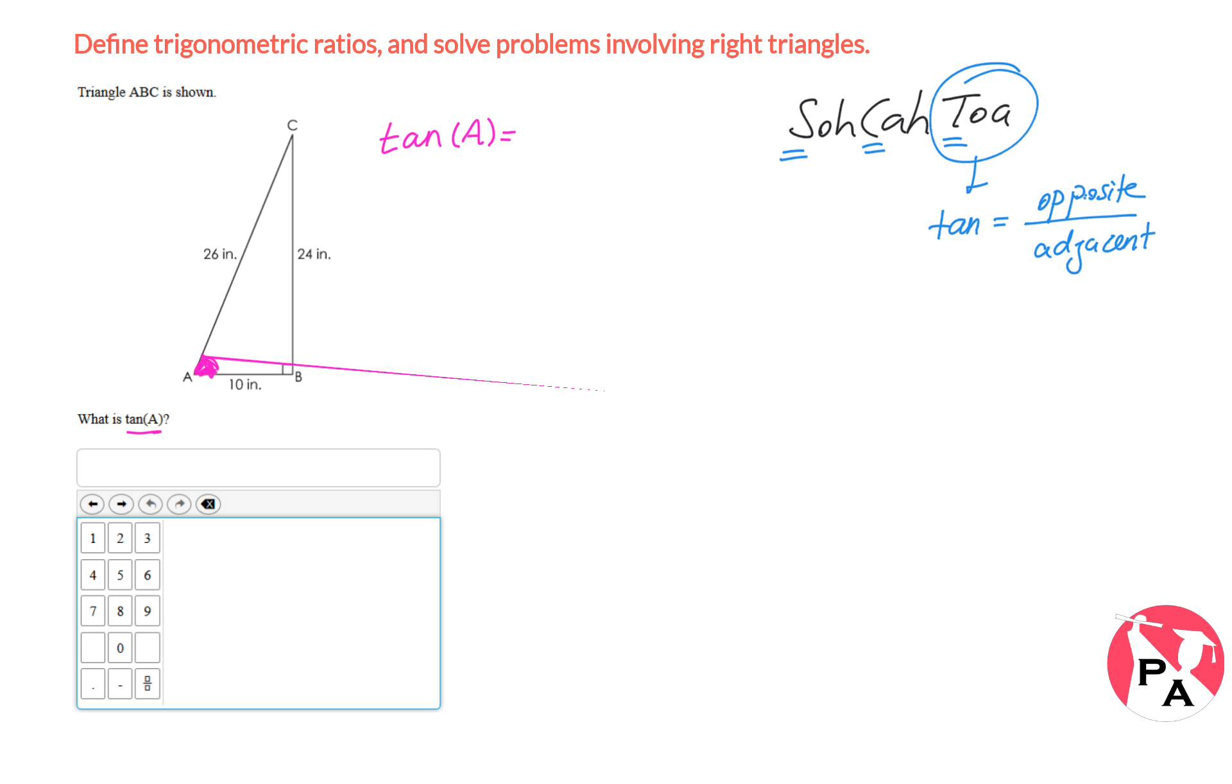What we need is the tangent of this angle. Tangent of this angle is opposite is 24 inches over adjacent. Adjacent means right next to it, right here, 10 inches.